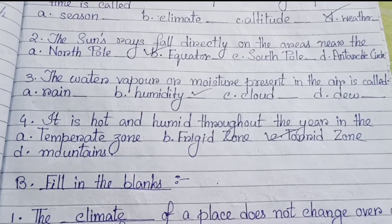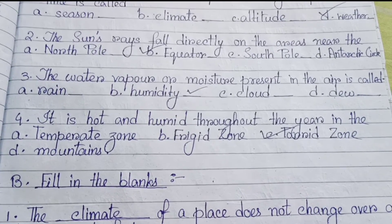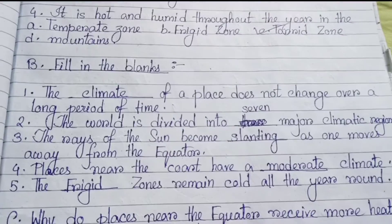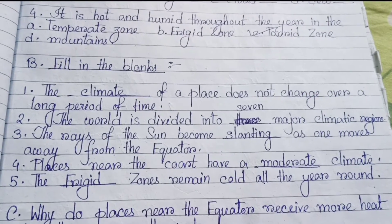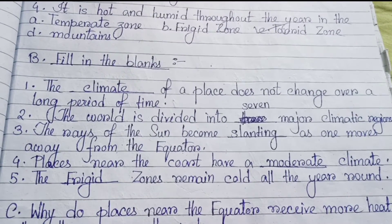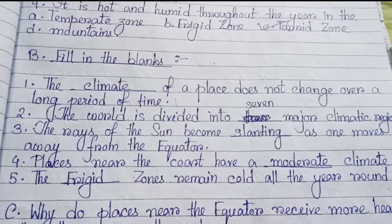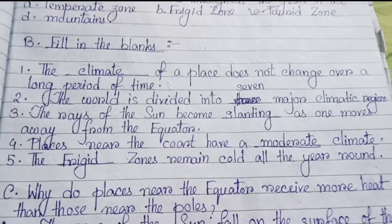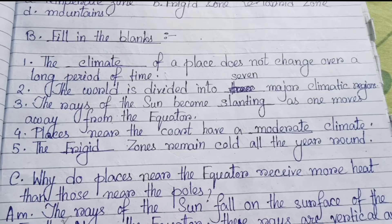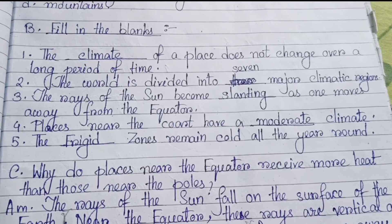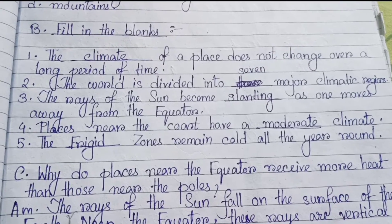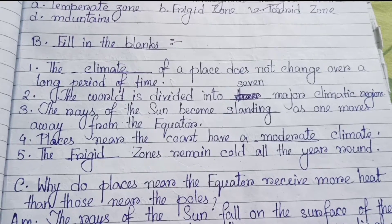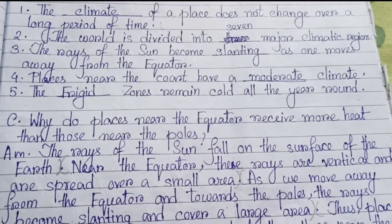Number four, it is hot and humid throughout the year in the — answer is (c) torrid zone. Next, fill in the blanks: Number one, the climate of a place does not change over a long period of time. Number two, the world is divided into seven major climate regions. Number three, the rays of the sun become slanting as one moves away from the equator. Number four, places near the coast have a moderate climate. Number five, the frigid zones remain cold all the year round.